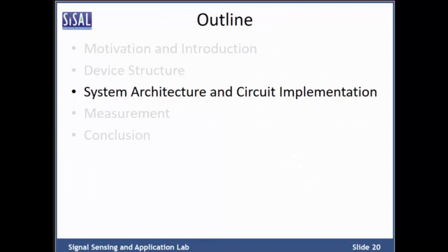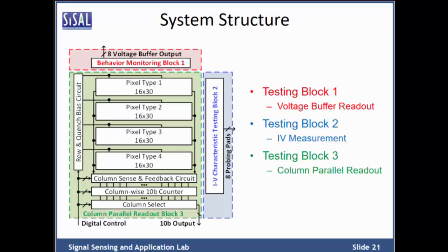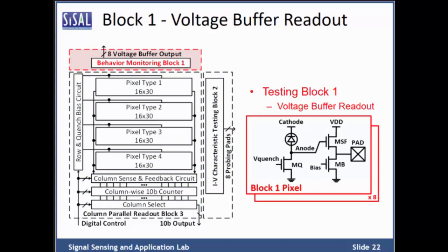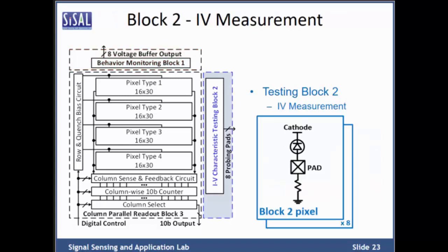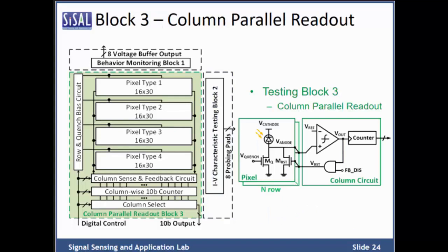Now I will show the system architecture and circuit implementation. This slide shows the system structure of the testing platform, which includes three blocks. In block 1, we use a source follower buffer as a voltage buffer to monitor the transient behavior of the SPAD. Block 2 is used to measure the IV characteristics and the breakdown voltage. Block 3 is the column parallel readout circuit, which includes a five-pixel array, column sharing circuit, and row-wise and column-wise circuits. The pixel in the same column accesses the column bus and connects to the readout circuit — a comparator and counter.